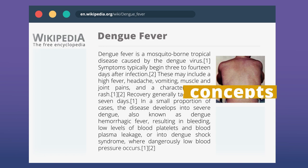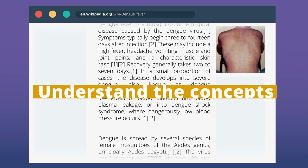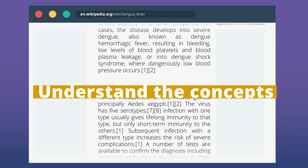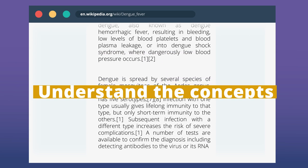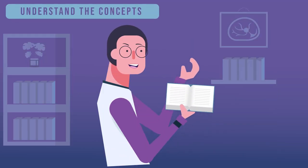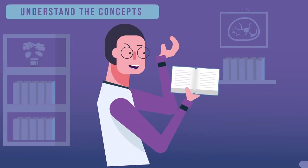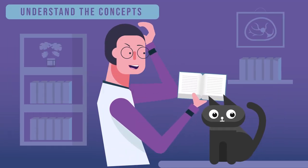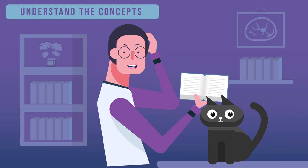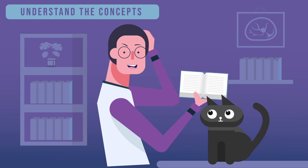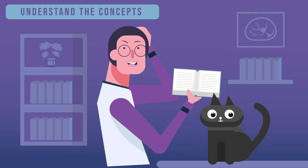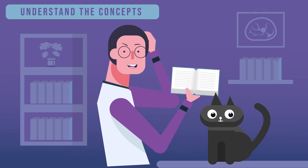The first step is to read the chapter and understand it. If you can teach the concepts to a friend, pet, or an imaginary class of students, then you have understood the concepts.